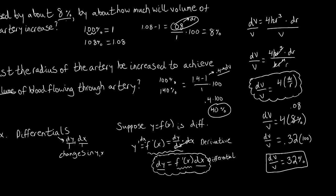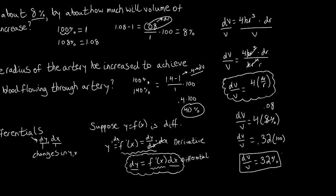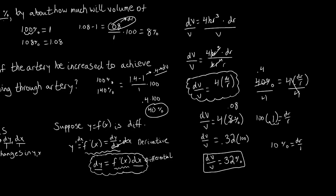For the second question, we use the same differential form dV/V = 4(dr/r) but now dV/V equals 40% and we solve for the percent change in radius. Converting 40% to a decimal gives 0.4, and dividing 0.4 by 4 gives 0.1 equals dr/r. Multiplying by 100, we get 10% — so the radius must be increased by 10% to achieve a 40% increase in the volume of blood flowing through the artery.